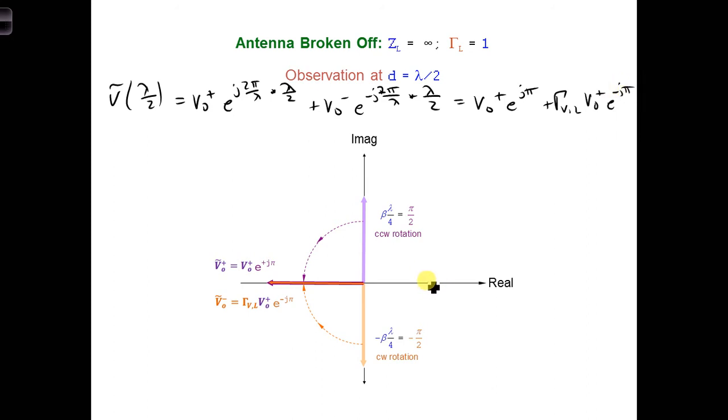And since if this positive voltage phasor rotates a distance of pi and the negative voltage phasor rotates a distance of pi, they are both aligned again, and we get 2 v naught plus e to the j pi. We can put those together as 2 v naught plus e to the j pi.